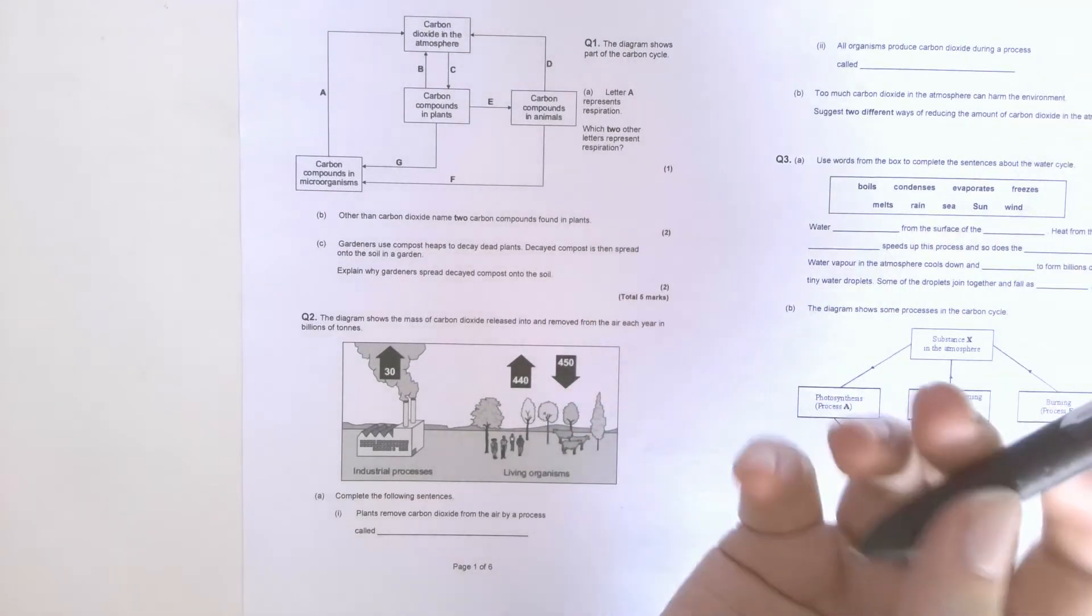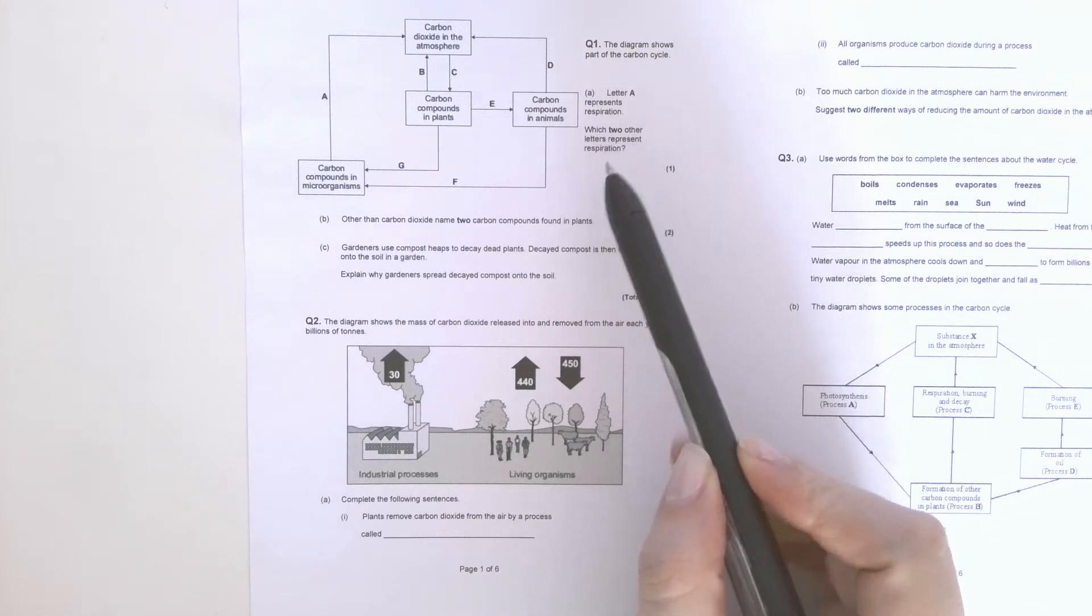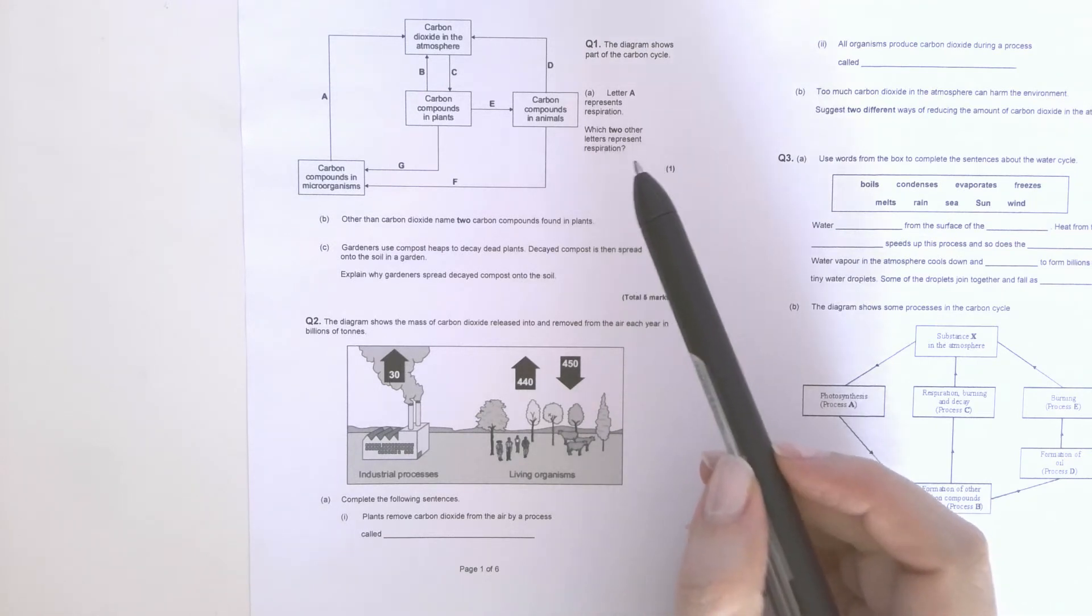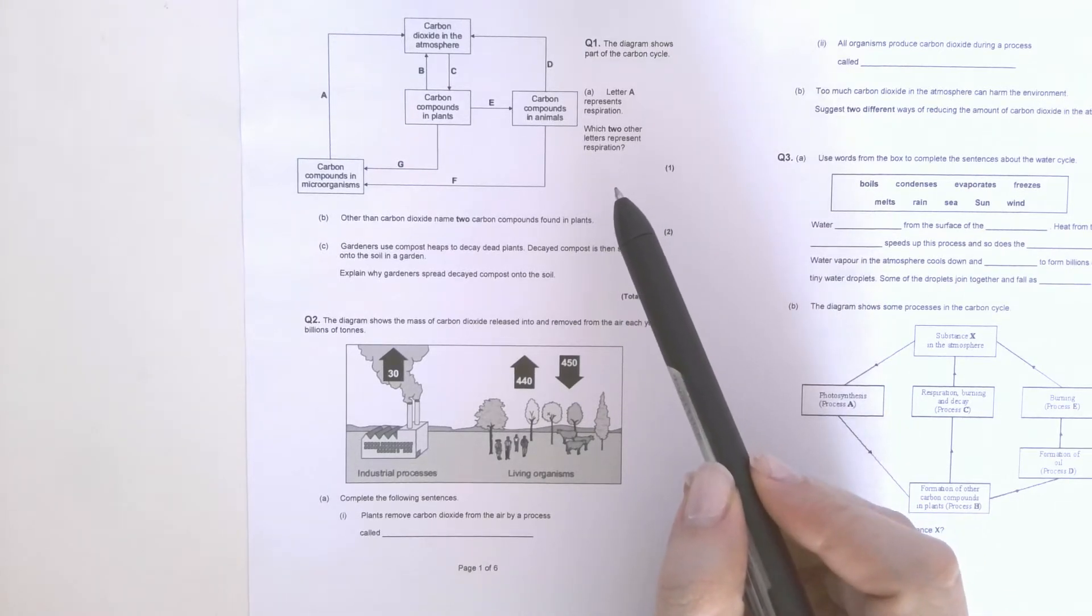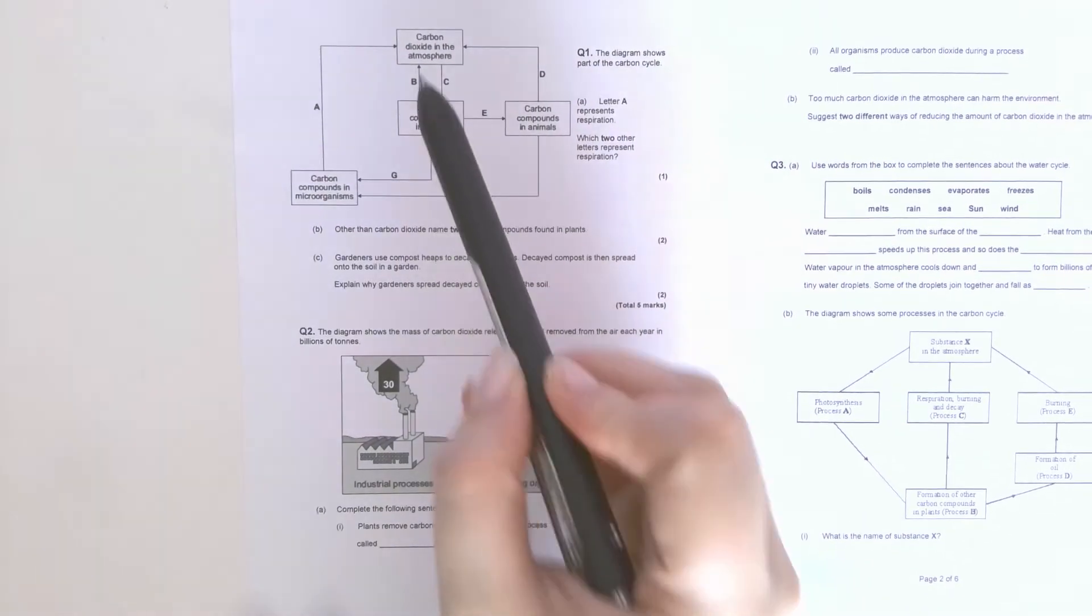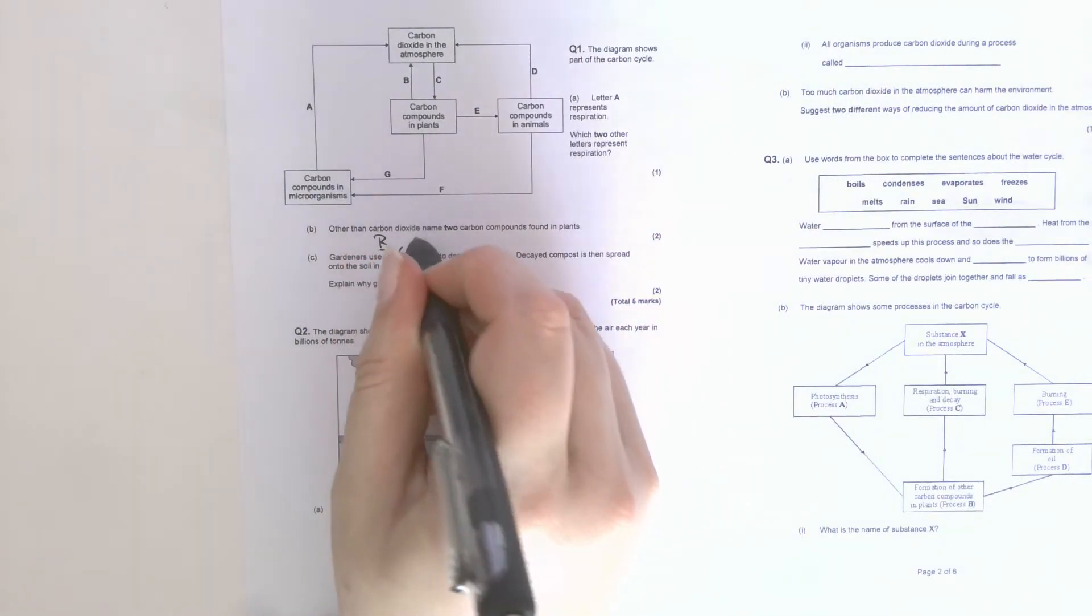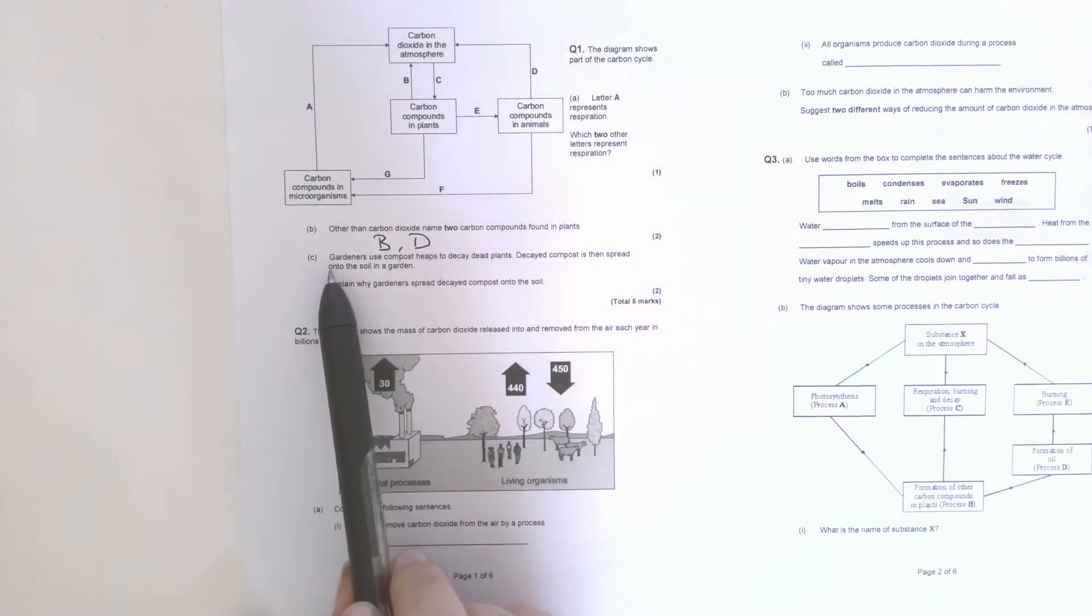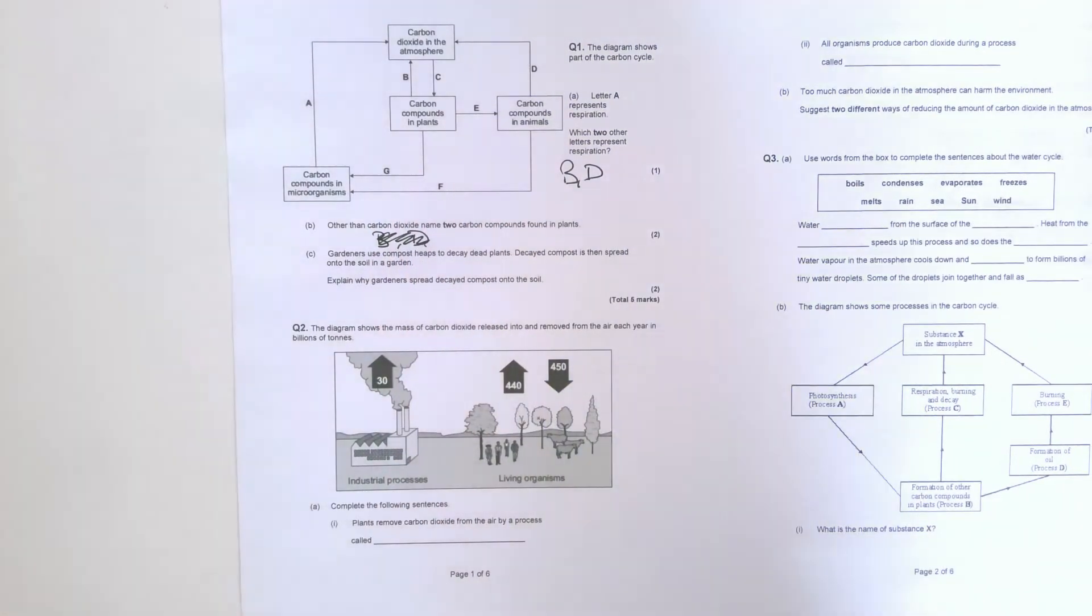So first question: letter A represents respiration. Which two other letters represent respiration? So respiration is living things breaking down glucose for energy and carbon dioxide is given off. So you're looking for carbon dioxide returning to the atmosphere, and the two that have carbon dioxide returning to the atmosphere are B and D. Nope, I've written that in the wrong place. B and D. I should have done this in pencil.